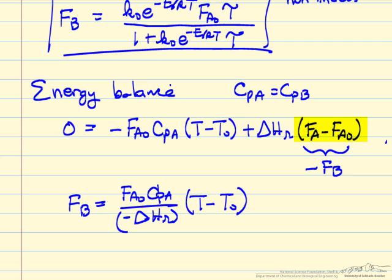This is how many moles have reacted, or how many moles of product that's formed. The temperature change between the inlet and the outlet, heat capacity of A, we're assuming the heat capacities are the same, and then the total flow rate.